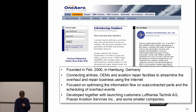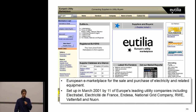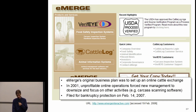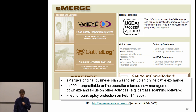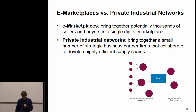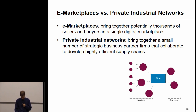Some further examples of e-marketplaces: Aero connects airlines, OEMs — original equipment manufacturers — and aviation repair facilities to streamline overhaul and repair business using the internet. Utilia was a marketplace for the sale and purchase of electricity and related equipment. Emerge was for online cattle exchange — sadly, it is no longer with us, having filed for bankruptcy in 2007.